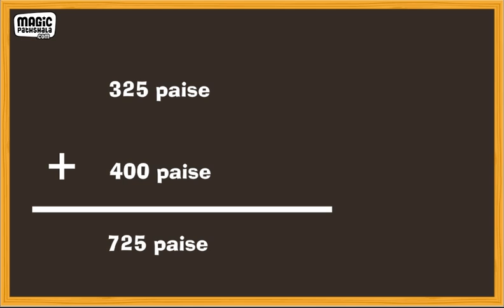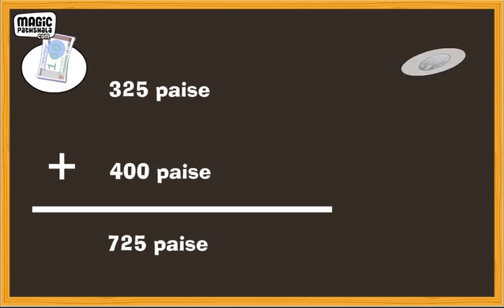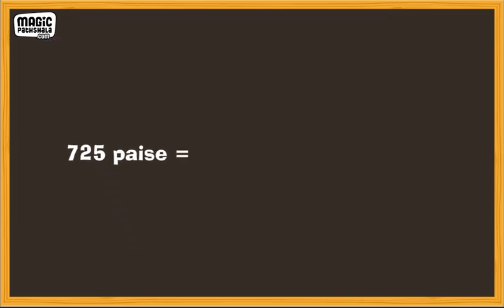Now, convert the sum into Rs. and paise. So, 725 paise will be Rs. 7 and 25 paise.